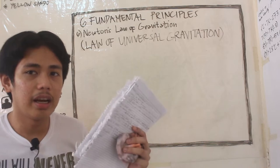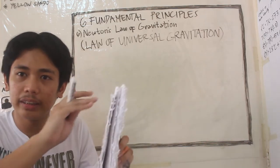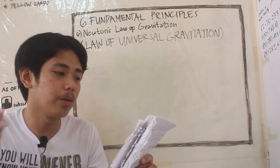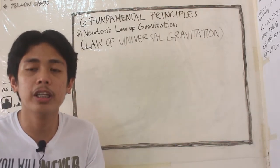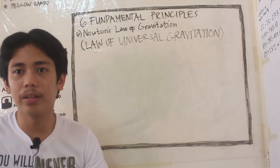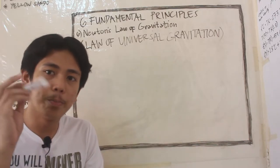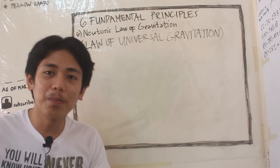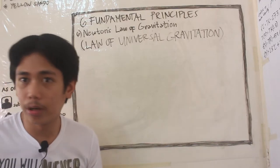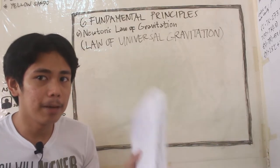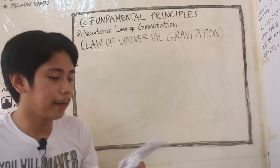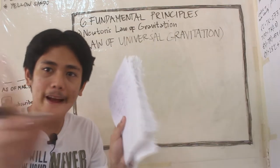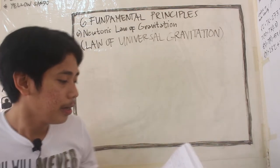The first part is clear - every object in the universe attracts every other object with a force directed along the line of centers of the two objects. A great example is how planets rotate around the sun, or how our moon orbits planet Earth. They attract every object, like the Earth's gravitational pull attracts the moon.